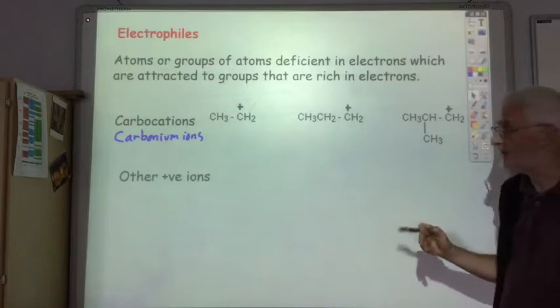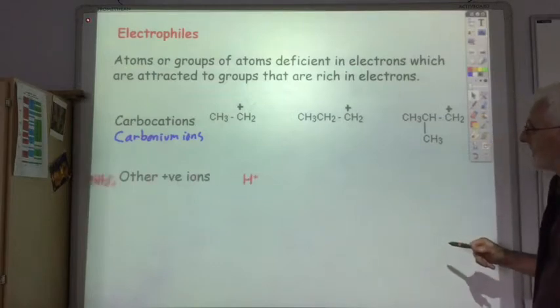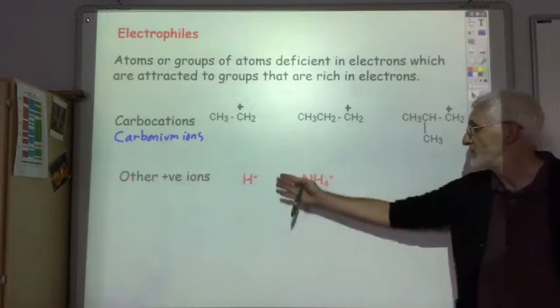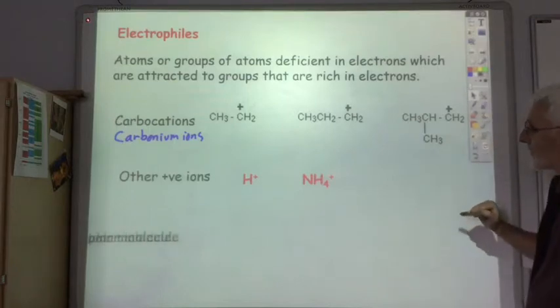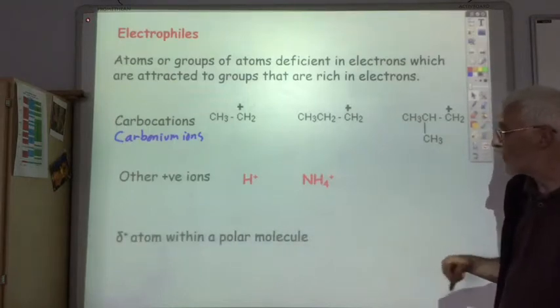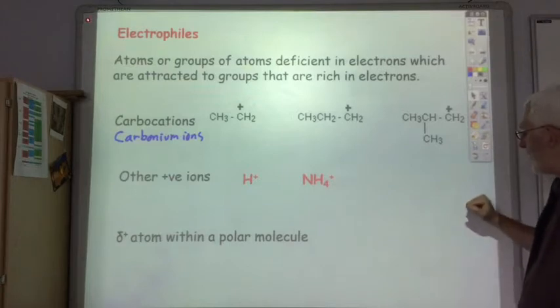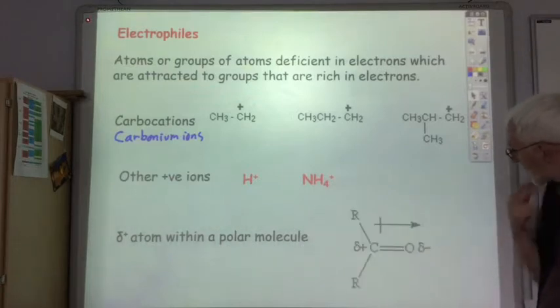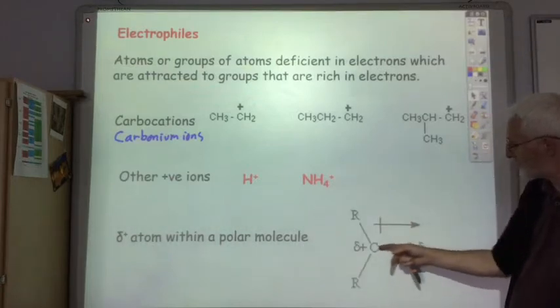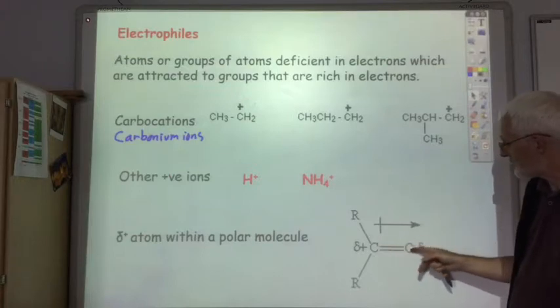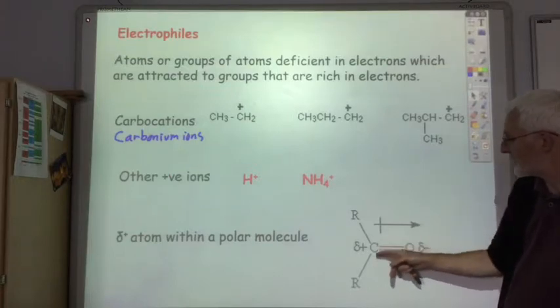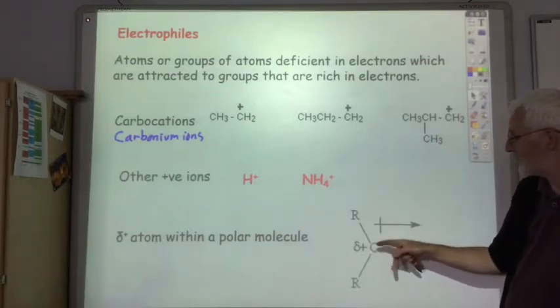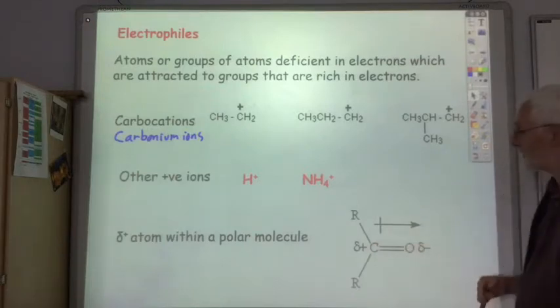Other positively charged ions, for example H plus ion or the ammonium ion, or the positive end within a polar molecule. So here's our carbonyl group. Oxygen is far more electronegative than the carbon so the carbon is slightly positive so again that can act as an electrophile.